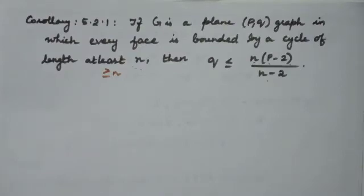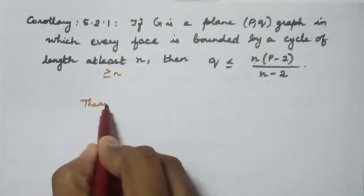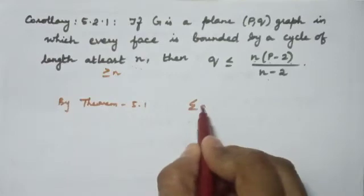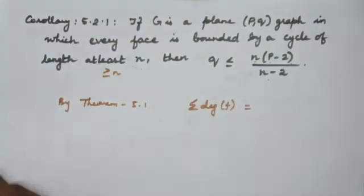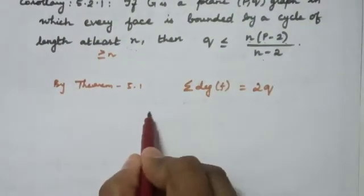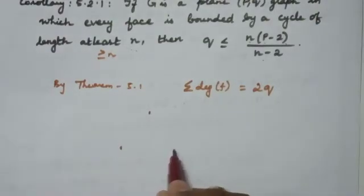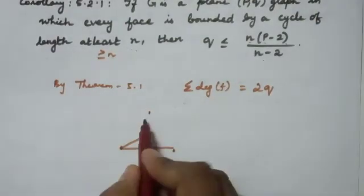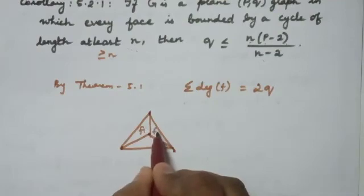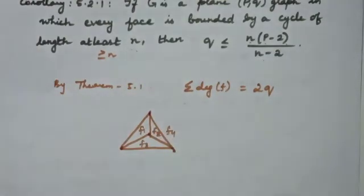We can use Theorem 5.1 to prove the condition. First, by Theorem 5.1 we have: the sum of the degrees of the faces is equal to twice the number of edges. Now we have a graph. In this graph, how many faces are there? There are 4 faces: F1, F2, F3, and F4.